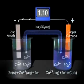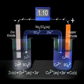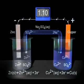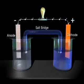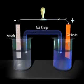Electrons flow from the anode to the cathode through the external circuit. To maintain electrical neutrality in the two cell compartments, ions must move through the salt bridge. In summary, remember that in a voltaic cell, the anode at which oxidation occurs is the negative electrode, and the cathode at which reduction occurs is the positive electrode. Electrons flow through the external circuit from anode to cathode.